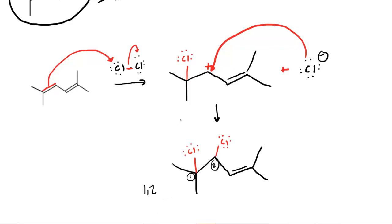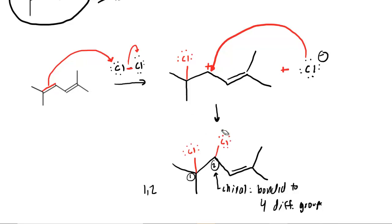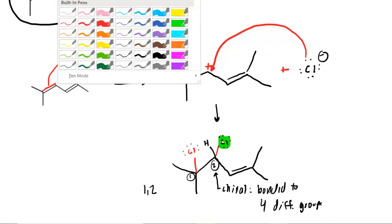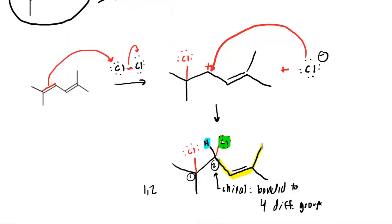The question also told us to pay attention to stereochemistry. Looking carefully at carbon number two, that carbon is actually a chiral carbon. A chiral carbon is a carbon bonded to four different groups. We have the chlorine, a hydrogen, the group containing the double bond, and the group containing the other chlorine — four different groups. Indeed, carbon number two is therefore a chiral carbon.